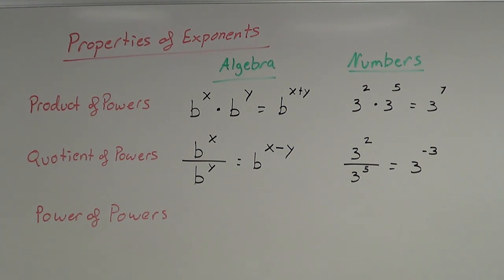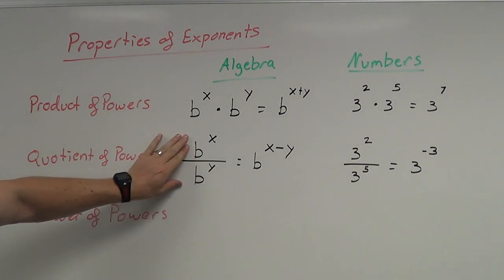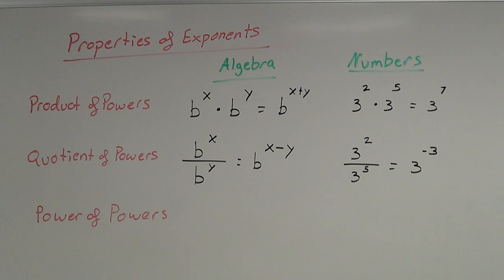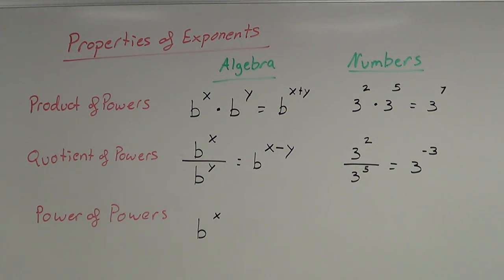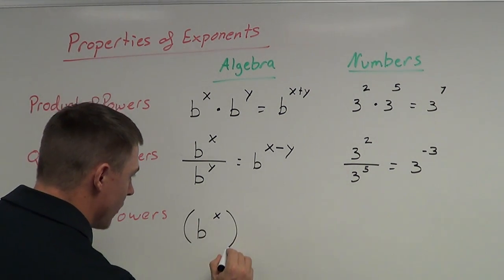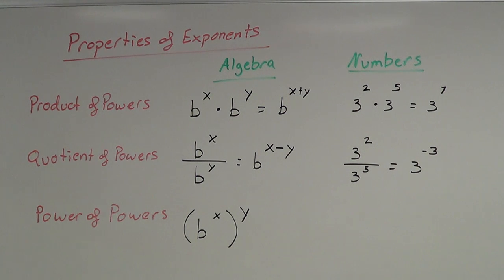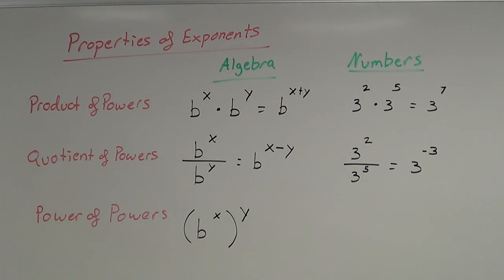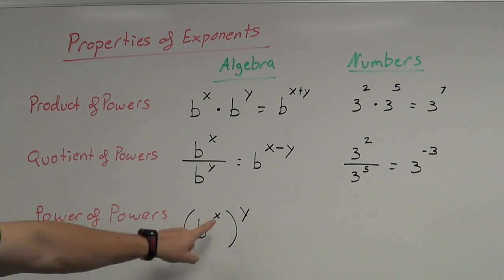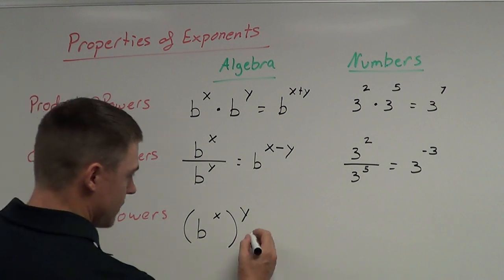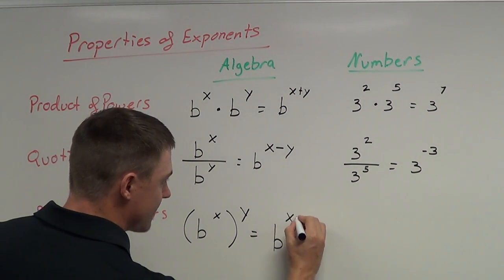Last but not least is power of powers. We've multiplied like bases and divided like bases; now we're raising a power to another power. So if I have a base b to the x power, and then I take that whole thing to the y power, we call this a power of a power. The rule is: multiply the two exponents together, giving b to the x times y.